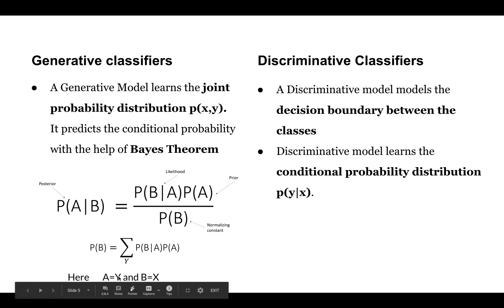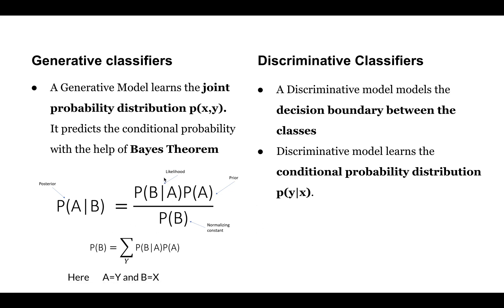For predicting, the generative model uses Bayes' theorem. In Bayes' theorem, if A equals Y and B equals X, then we can compute P(Y|X) using the standard Bayes formula.